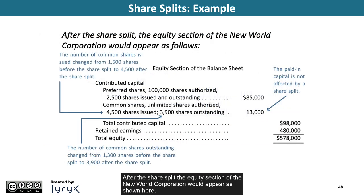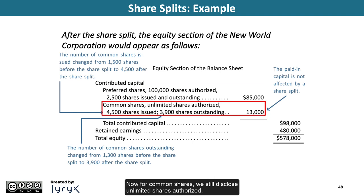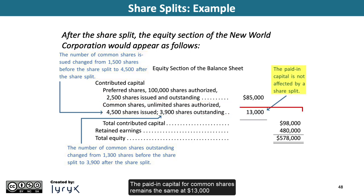After the share split, the equity section of New World Corporation would appear as shown. The preferred share section and disclosures remain unchanged. For common shares, we still disclose unlimited shares authorized, but now 4,500 shares issued and 3,900 shares outstanding — simply the amounts prior to the split multiplied by 3. The paid-in capital for common shares remains the same at $13,000, as does total contributed capital at $98,000 and total equity at $578,000.